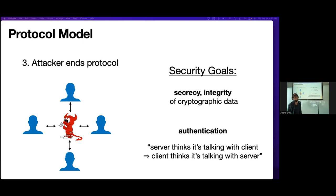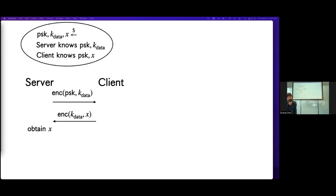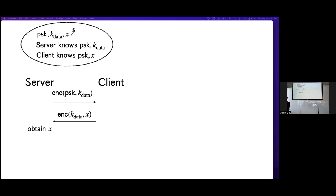Consider this example protocol: the goal is for the client, which has a secret value x, to send it to the server securely. The server and client share a pre-shared key PSK. The server generates a data key k_data, encrypts it under the PSK, and sends the ciphertext to the client. The client decrypts to obtain k_data, encrypts x under k_data, and sends that ciphertext back to the server. Since the server generated k_data, it can decrypt and obtain x.